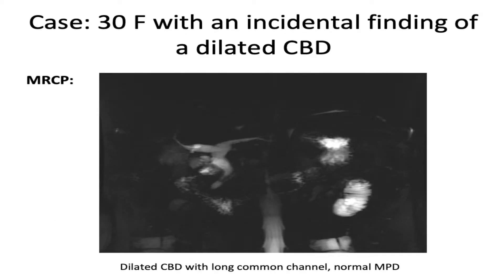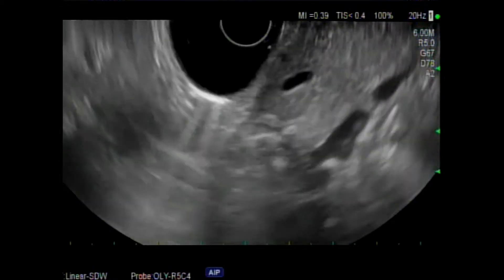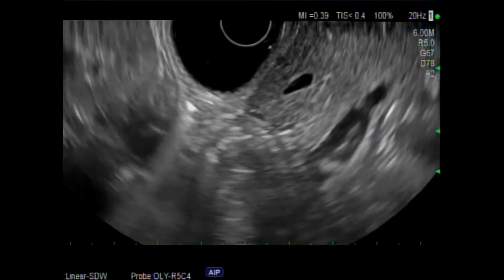The case discussed in this video is that of a 30-year-old woman with an incidental finding of a dilated CBD. An MRCP was performed which showed a dilated CBD with a long common channel and a normal pancreatic duct. A linear EUS was undertaken starting at D2.